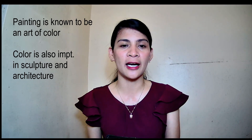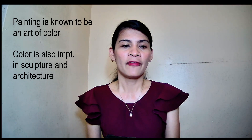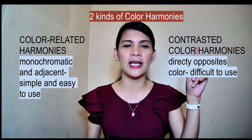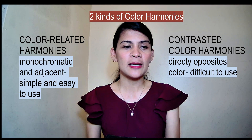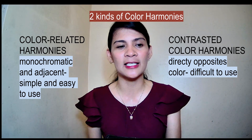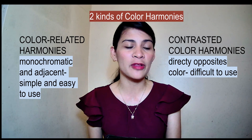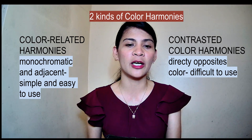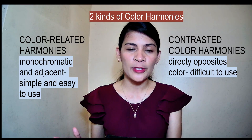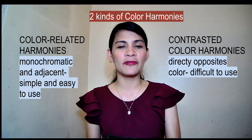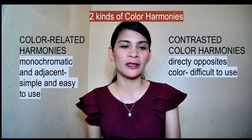Although painting is known as the art of color, color is also important in sculpture and architecture. There are two kinds of color harmonies: related color harmonies and contrasted color harmonies. Related color harmonies are monochromatic or adjacent — monochromatic harmonies are the simplest and easiest to use, having something in common. Contrasted color harmonies use complementary colors — colors that lie directly opposite each other on the color circle. Colors are known to have varied psychological and emotional connotations, so an artist must be careful in choosing the right color.